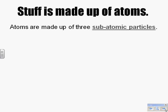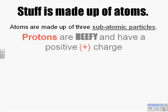Inside atoms there are even smaller particles, and that's where we get the name subatomic particles from. Sub meaning smaller than or less than atoms, and particles — subatomic parts. There are three main subatomic particles that we need to know for chemistry and concern ourselves with this year.